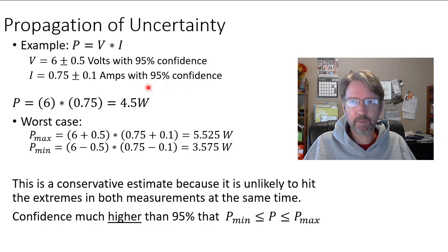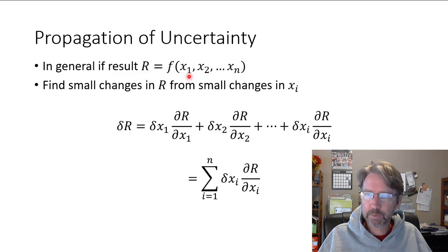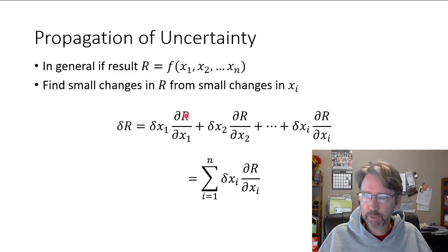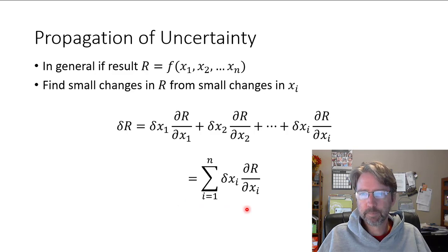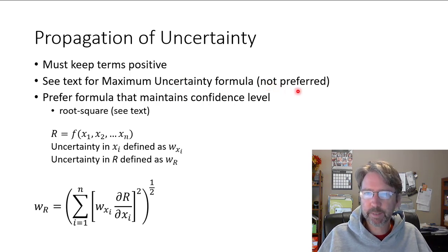So it's a conservative, easy-to-understand method, but it doesn't keep the same confidence level. If we want to keep the same confidence level, we can look into calculus of variations. We have a calculation r as a function of several measurements x1, x2, and so forth. For uncertainty, we don't want positive terms to cancel out with negative terms, so we can use the absolute value — that gives a maximum uncertainty formula in the textbook, but it still doesn't keep the same confidence level. Using a root-sum-square method does keep the confidence level, as shown in the book.